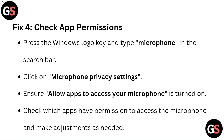Fix 4: Check app permissions. Press the Windows logo key and type 'microphone' in the search bar. Click on Microphone Privacy Settings. Ensure 'Allow apps to access your microphone' is turned on. Check which apps have permission to access the microphone and make adjustments as needed.